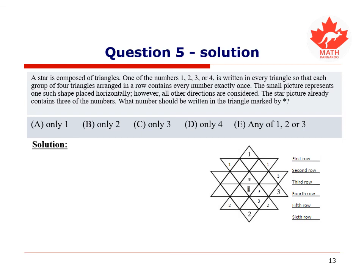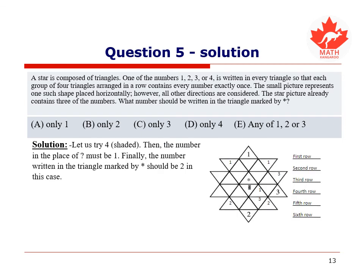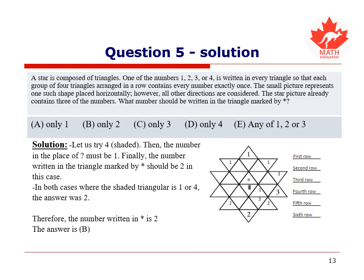Secondly, we try 4 in the shaded box. Then, the number 1 must be placed instead of the question mark. Again, the number written in the triangle marked by the asterisk should be 2. In both cases, where the shaded triangle is 1 or 4, the answer is 2. Therefore, the number written in the triangle marked by the asterisk should be 2, and our answer is b.